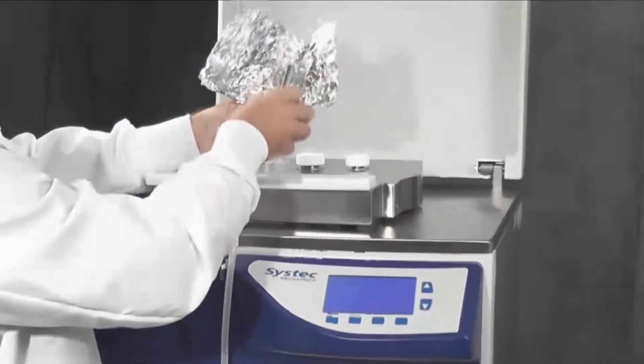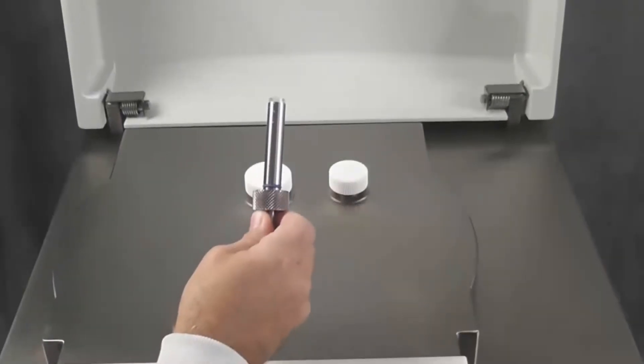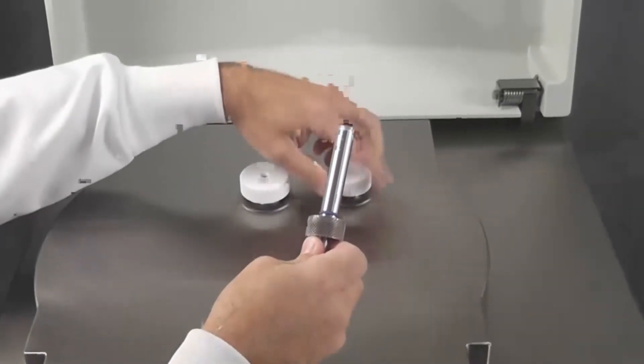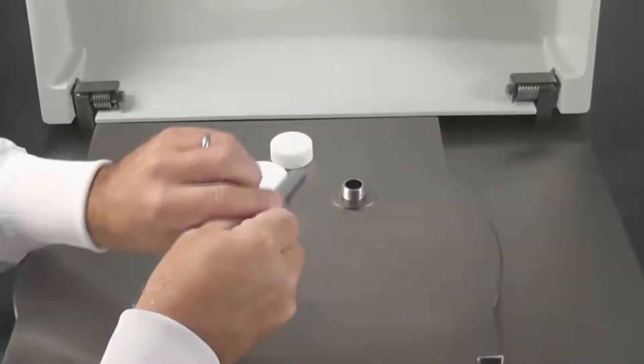After sterilization is complete, take the dispensing tube which has been autoclaved. Remove the filling cap and insert the dispensing tube.